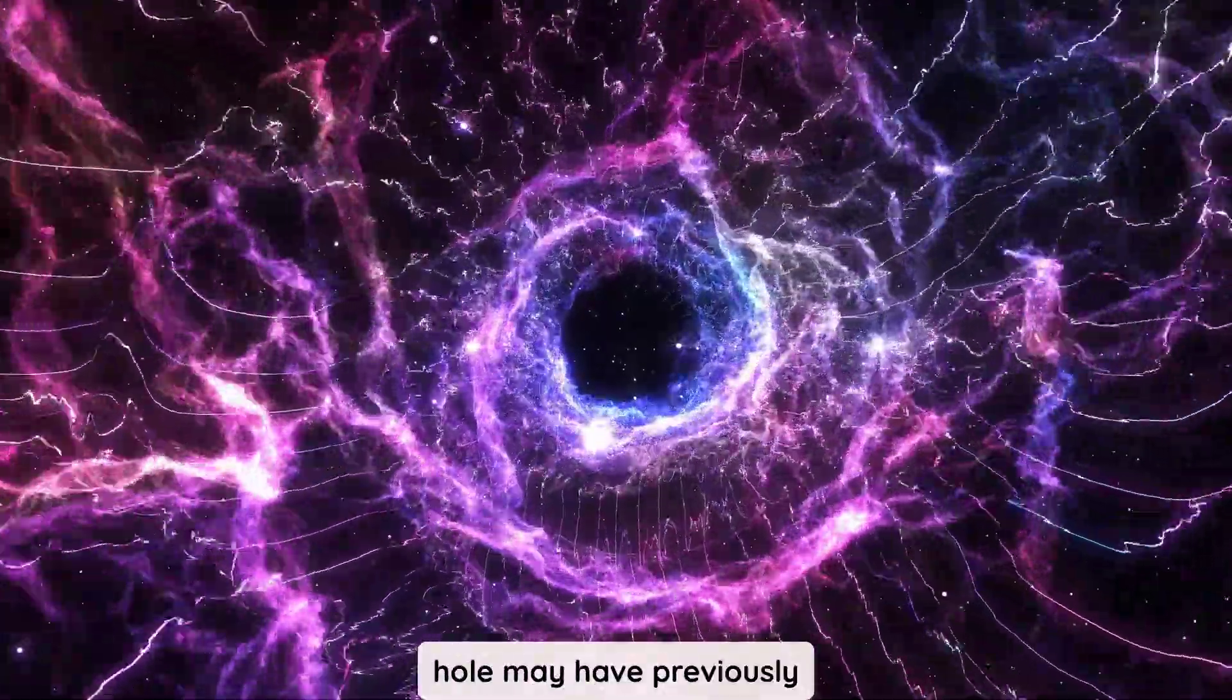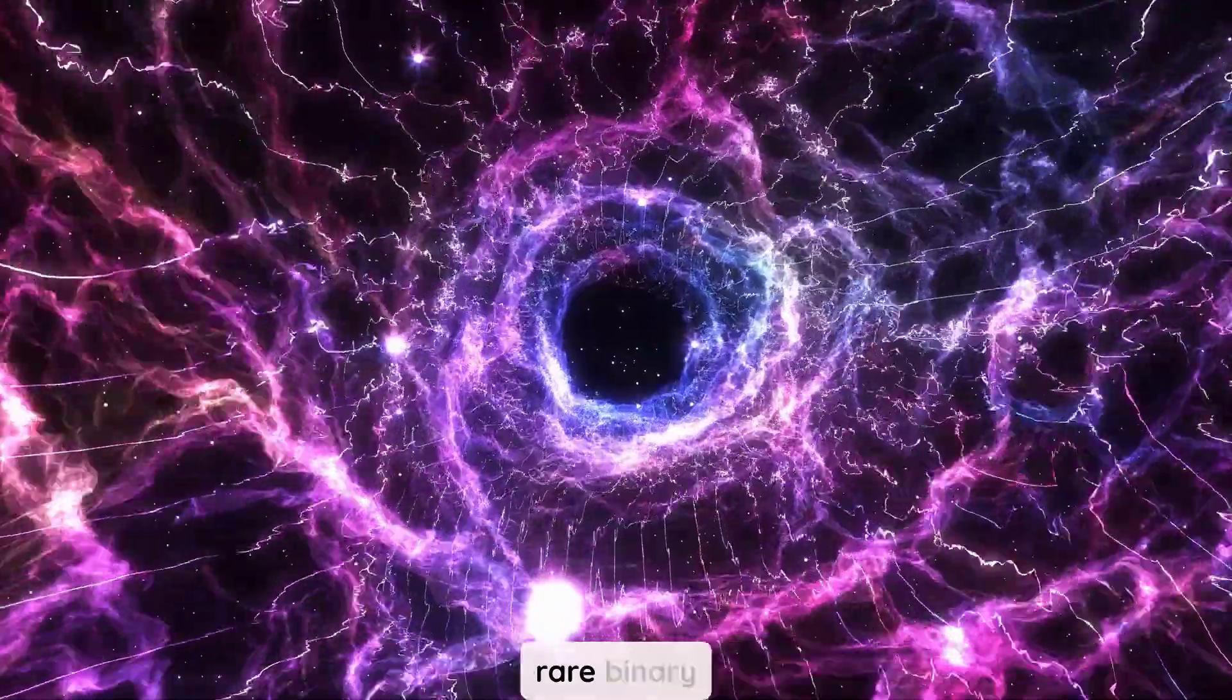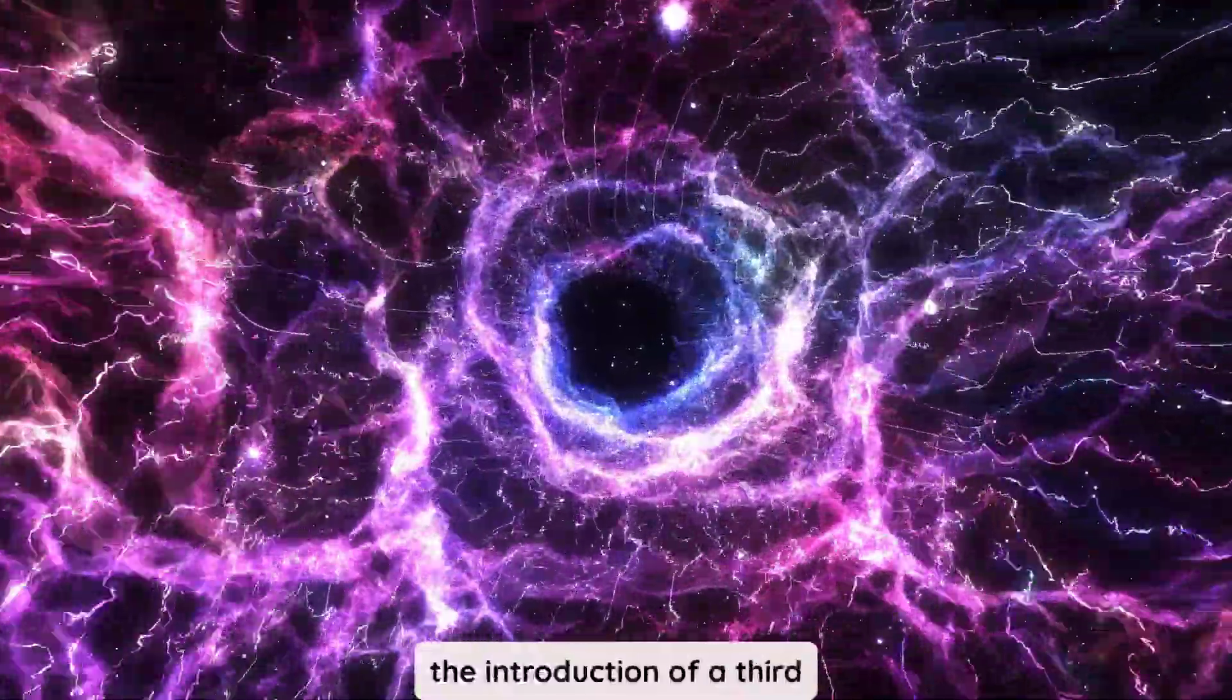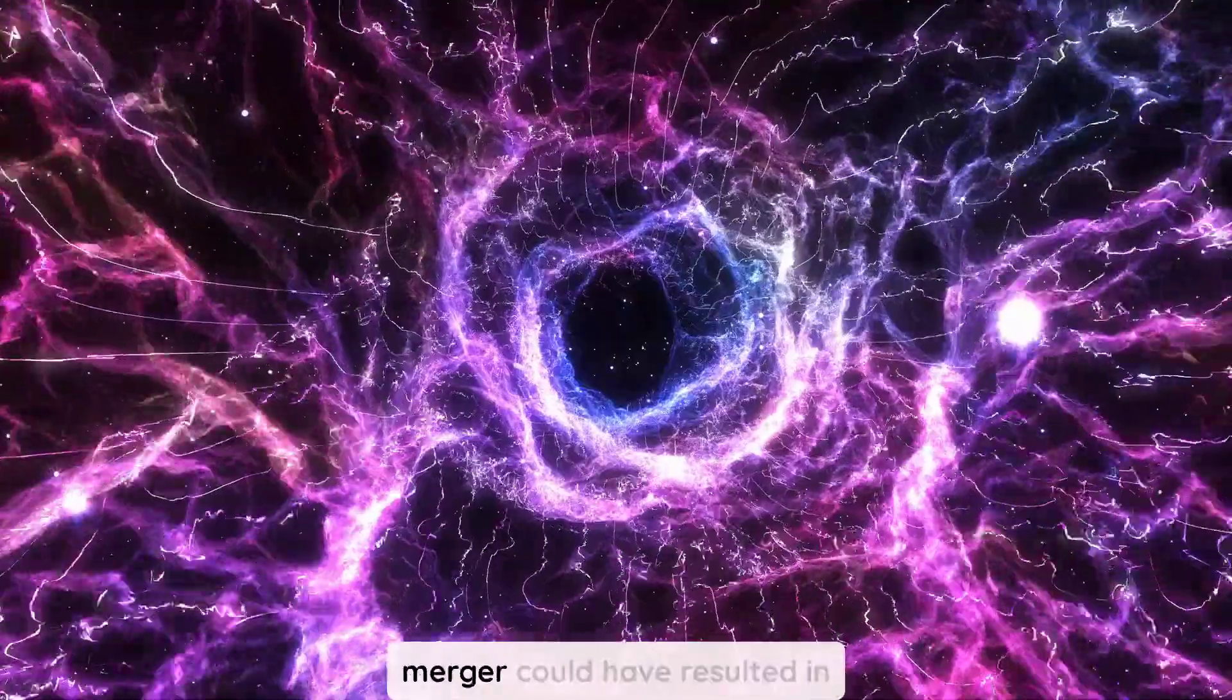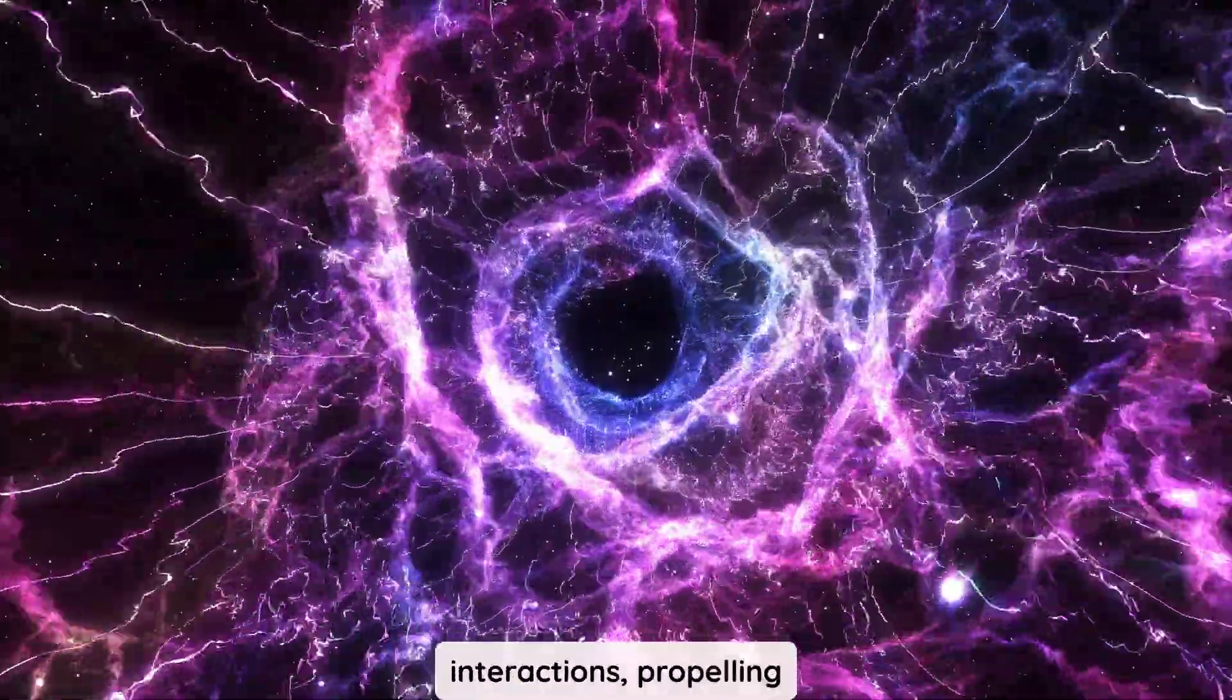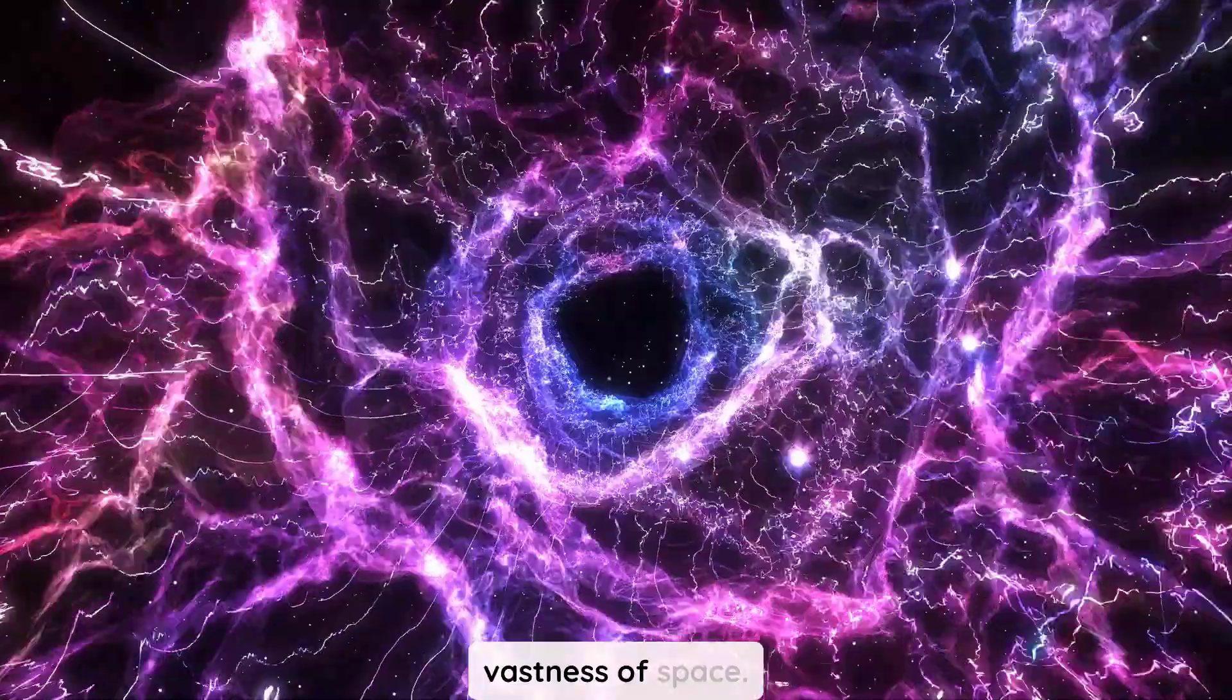This raises the question of how such a massive entity could simply depart. The authors of the study proposed that the black hole may have previously orbited another black hole in a rare binary configuration. Subsequently, the introduction of a third black hole during a galaxy merger could have resulted in chaotic gravitational interactions, propelling one black hole into the vastness of space.